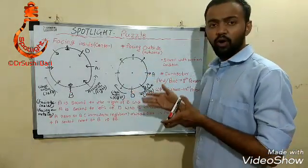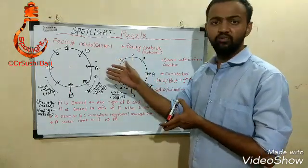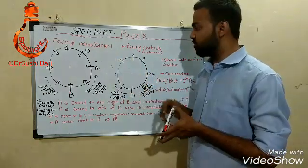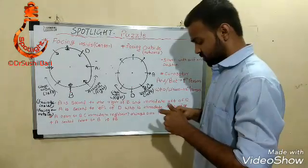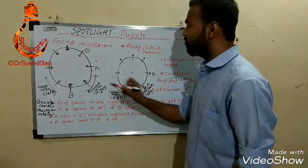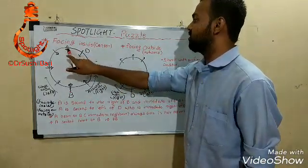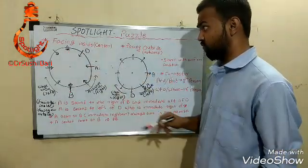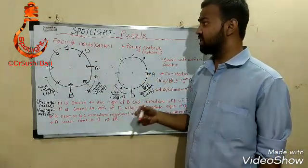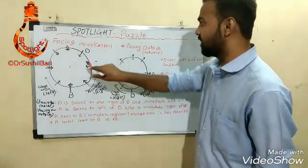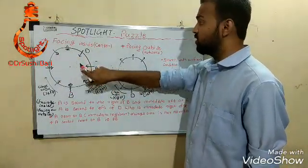With the proper approach, you will solve this puzzle within the proper time. In circular base arrangement questions, they will ask about four persons sitting, six persons sitting, or eight persons sitting. Today I'll discuss the eight-person sitting circular arrangement.